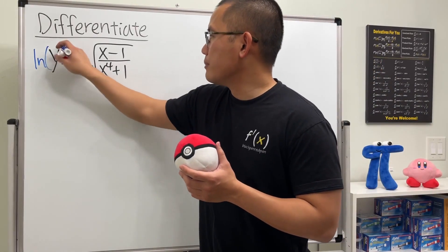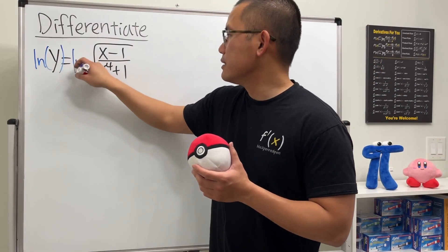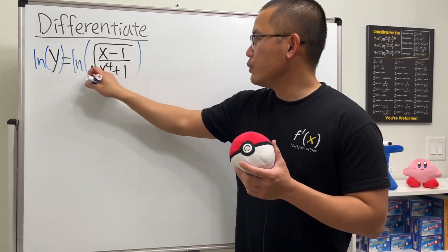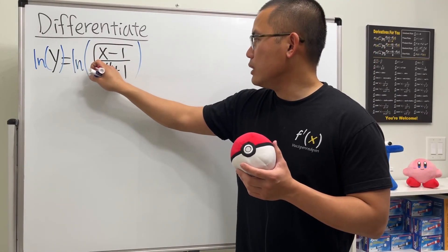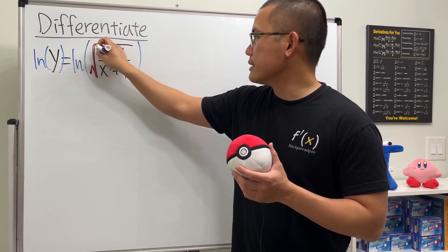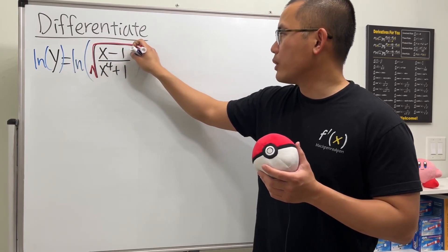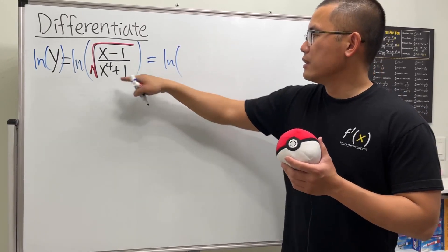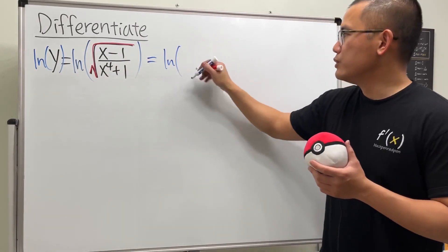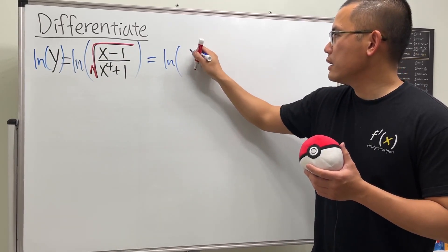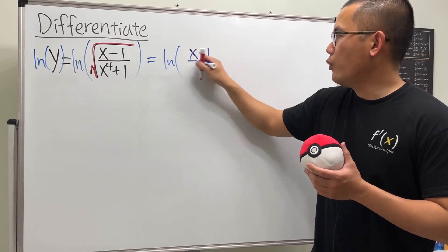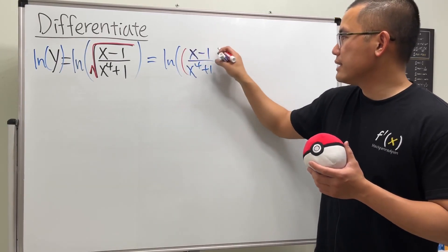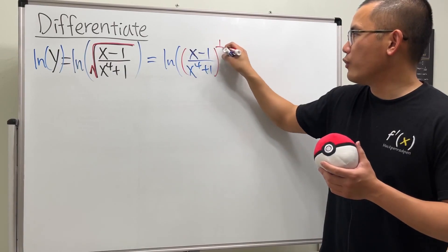Let's take the natural log on both sides, because this way we can simplify the expression on the right-hand side. We will also have to look at the square root as the one-half power. So this is the same as saying ln of x minus 1 over x to the fourth power plus 1, raised to the 1 over 2 power.